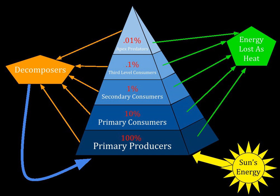The advantages of the pyramid of productivity as a representation: it takes account of the rate of production over a period of time. Two species of comparable biomass may have very different life spans, so a direct comparison of their total biomasses is misleading, but their productivity is directly comparable. The relative energy chain within an ecosystem can be compared using pyramids of energy, and different ecosystems can also be compared. There are no inverted pyramids. The input of solar energy can be added.